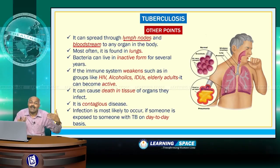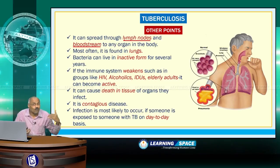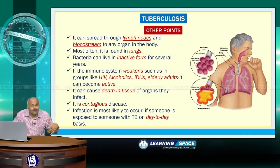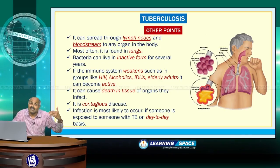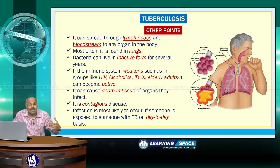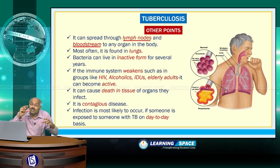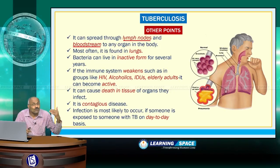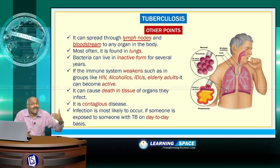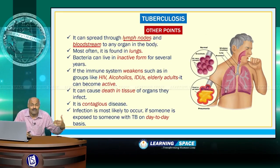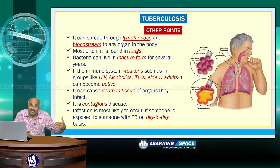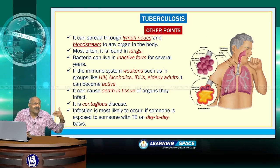TB germs spread through lymph nodes and the bloodstream to any organ in the body. Lymph nodes are present everywhere in our body and are part of the lymphatic system. Whenever there is infection in the body, inflammation of lymph nodes will occur. Doctors check for inflammation of lymph nodes to determine whether infection is present.